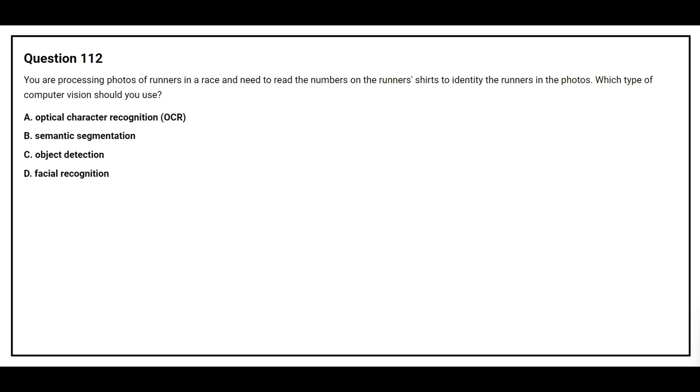Question number 112. You are processing photos of runners in a race and need to read the numbers on the runner's chart to identify the runners in the photos. Which type of computer vision should you use? Option A, optical character recognition. Option B, semantic segmentation. Option C, object detection. Option D, facial recognition. The correct answer is Option A, optical character recognition.